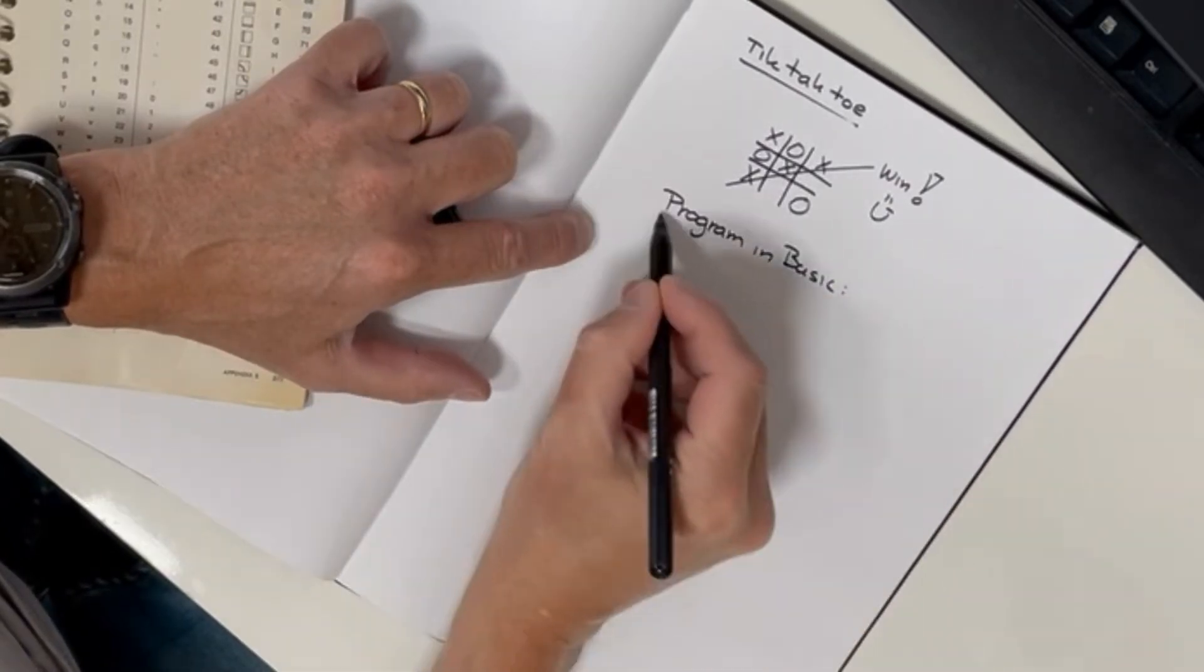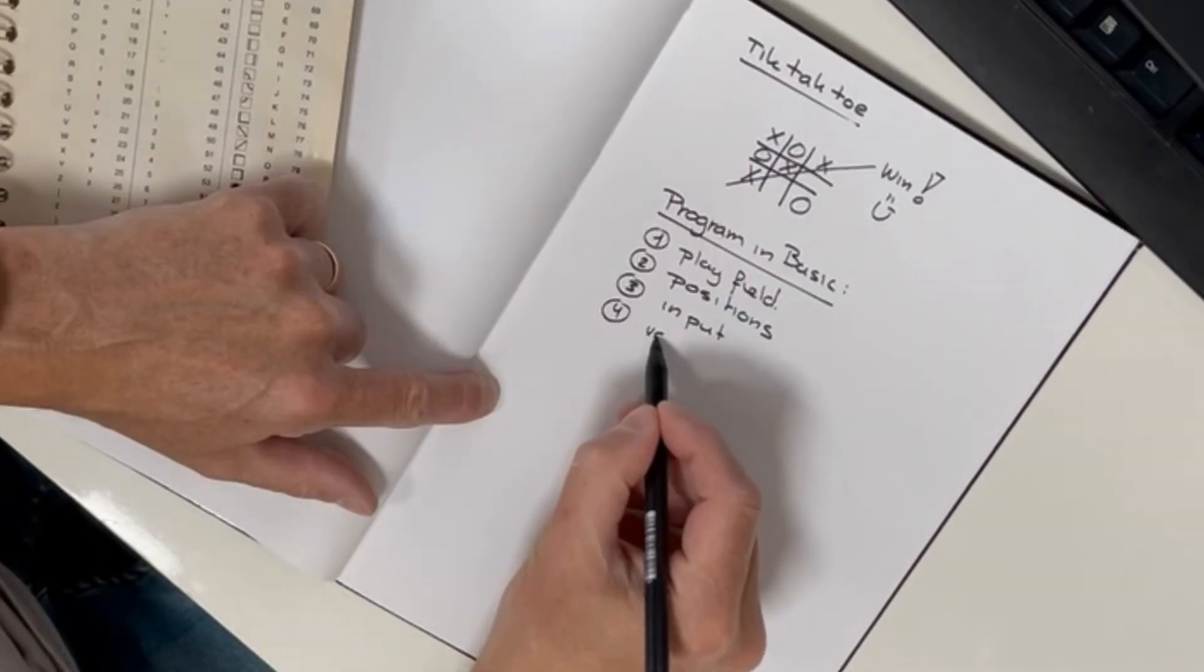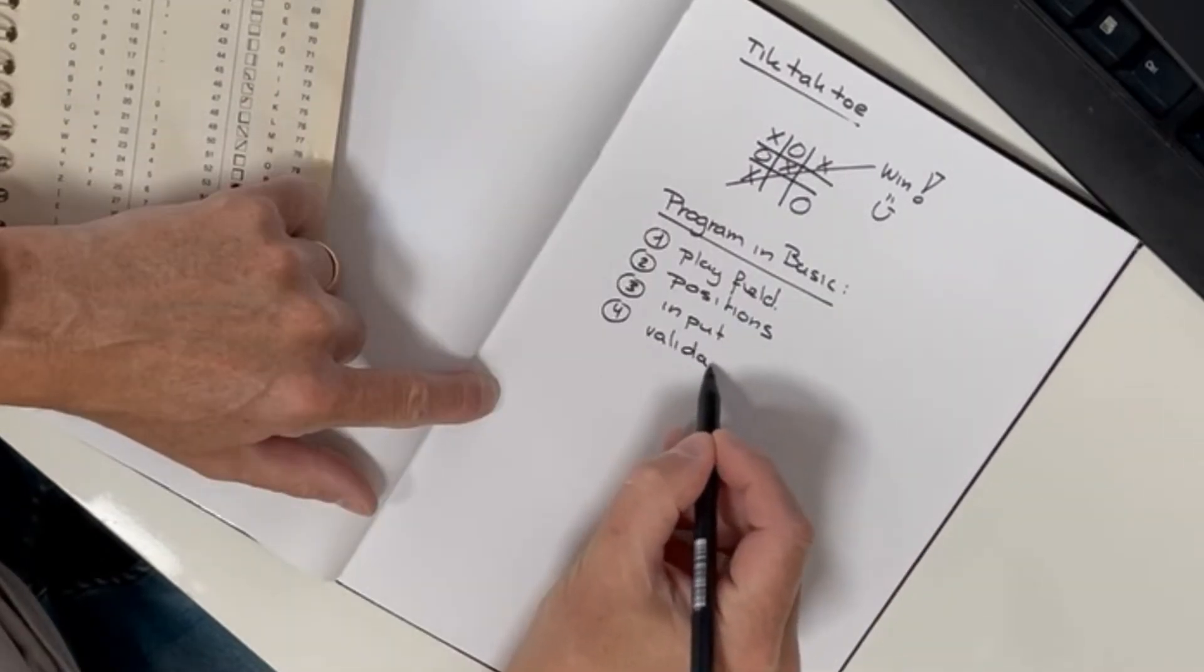Let's have a look at the game itself first, and write down which parts in the program we need. So determine what elements do we have to create code for in the Basic program.